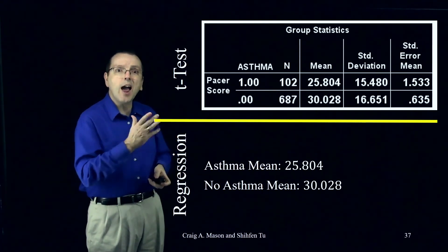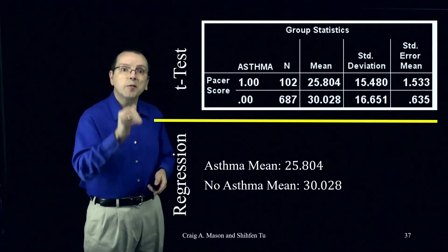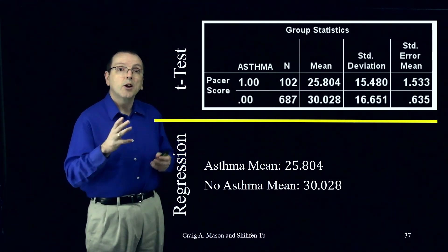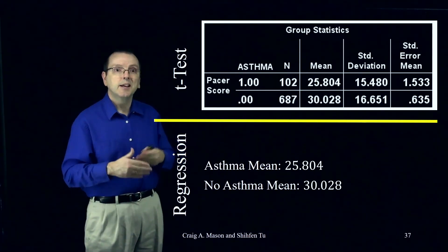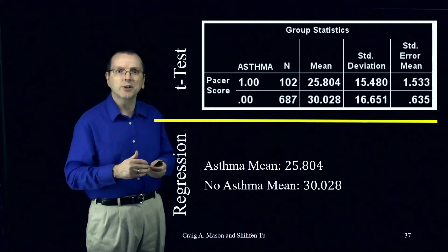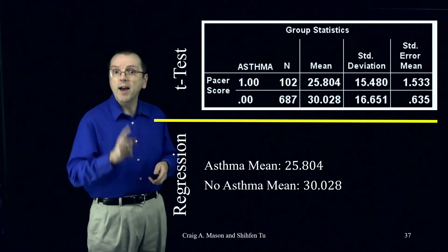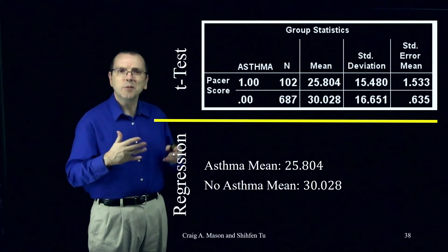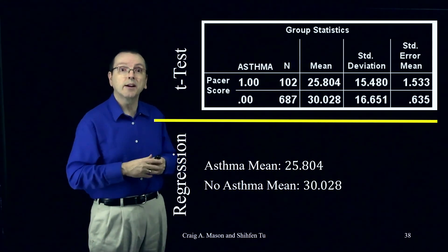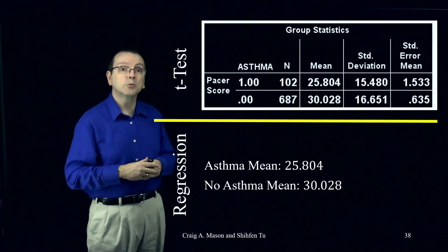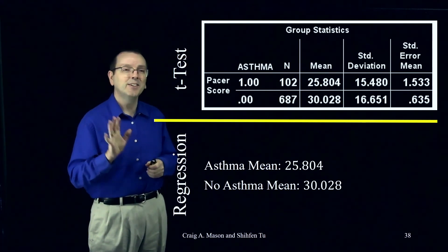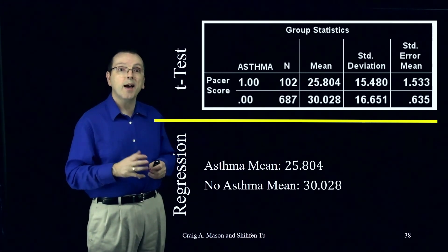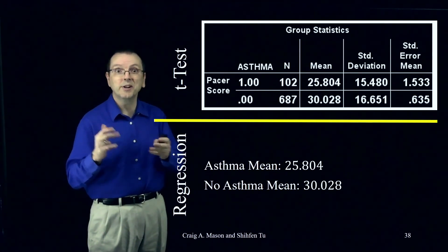For now, this does a nice job of showing how you can get the same result in either an independent samples t-test or in multiple regression. In fact, you can think of an independent samples t-test as simply a special case of regression — a regression where you only have one dichotomous predictor variable. Multiple regression is just a more general approach that can handle this type of data and other types of data and models as well. In our next video, we'll look at dummy coding when we have three or more groups, not just two. See you then, take care.